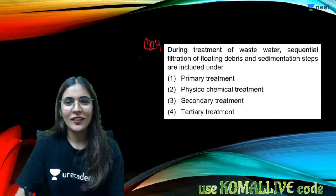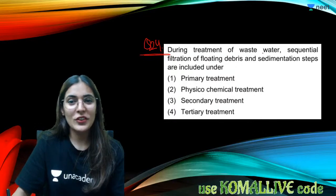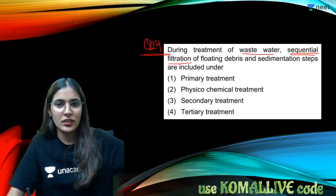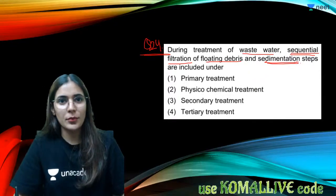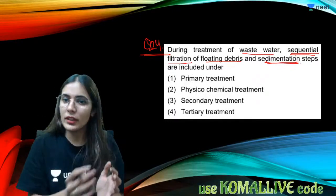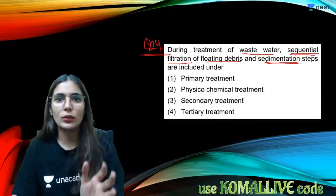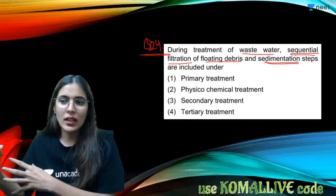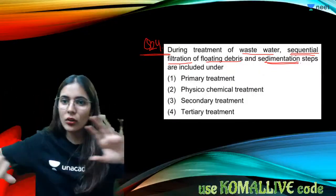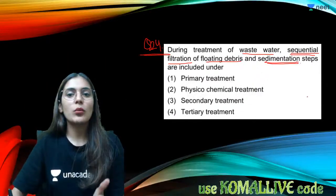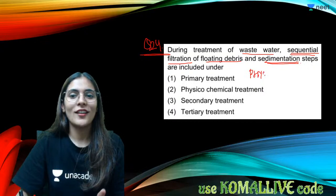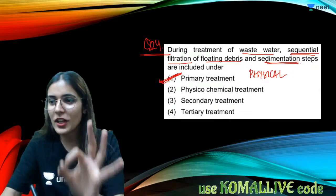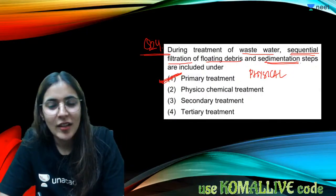Question twenty-four: during waste water treatment, sequential filtration, off-loading debris, and sedimentation steps involve physical removal of heavy material — nails, pebbles, floating matter. This is filtration and sedimentation, which occurs during primary (physical) treatment. The answer is primary treatment.